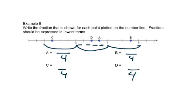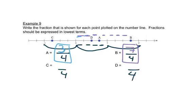Looking at point A, it is 3 spaces to the right of 0, so the fraction is 3 over 4. Point B is 7 spaces to the right — still out of 4 because each whole is divided into 4 pieces — giving 7 over 4, which is improper since it's beyond 1. Point C is 3 spaces to the left of 0, so it is negative 3 over 4.